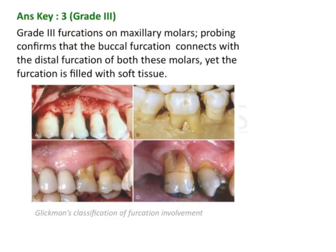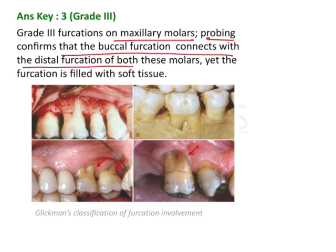Let's have a detailed look at how a grade 3 furcation looks. This is similar to what was asked in the question — these are all grade 3 furcations. This image shows grade 3 furcation on the maxillary molars, and probing would confirm that the buccal furcation connects with the distal furcation of the tooth, yet the furcation is filled with soft tissue. Clinically it may be filled with soft tissue, but probing and radiographic changes are the best ways to confirm the diagnosis.